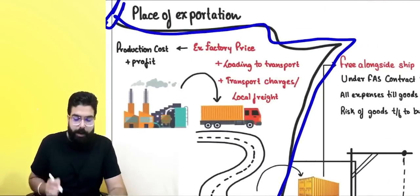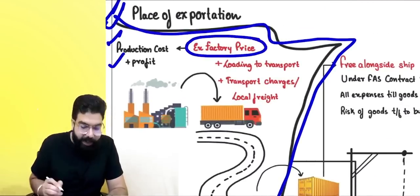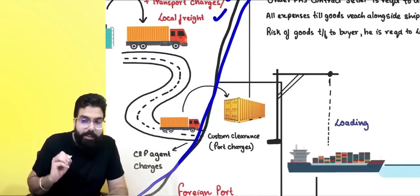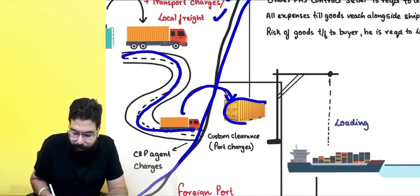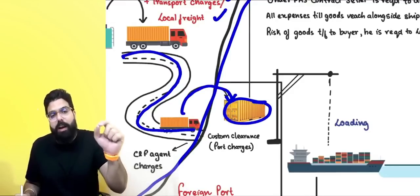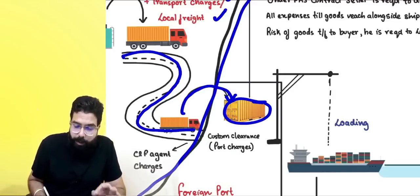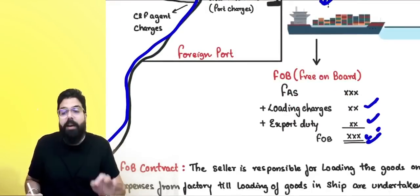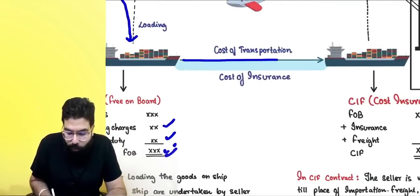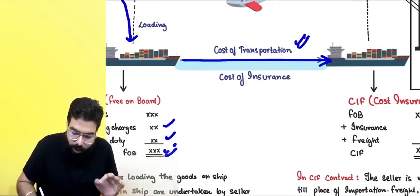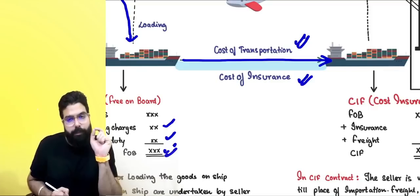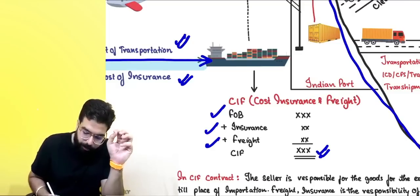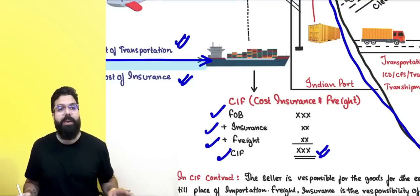Always remember: production cost plus profit is known as the ex-factory price. Ex-factory price plus loading cost, transportation, and local freight, once paid and goods reach alongside the ship, is known as FAS — Free Alongside the Ship. FAS value plus loading charges plus export duty gives you FOB. FOB plus ocean freight plus insurance gives you CIF — Cost, Insurance and Freight.